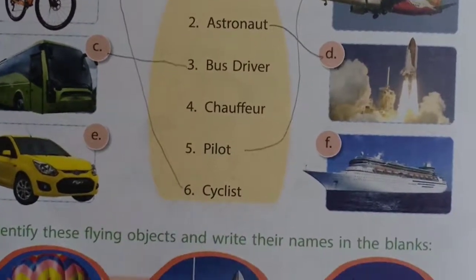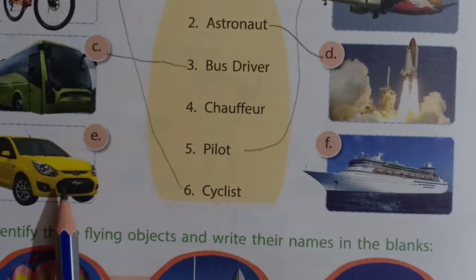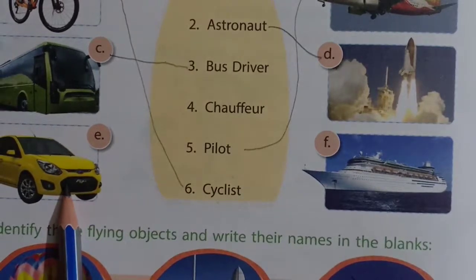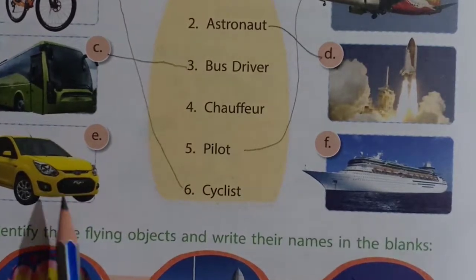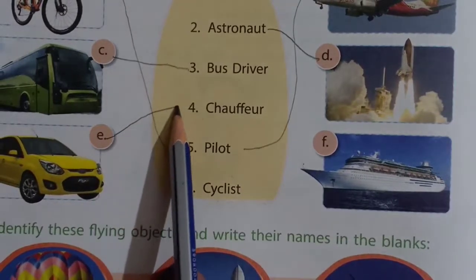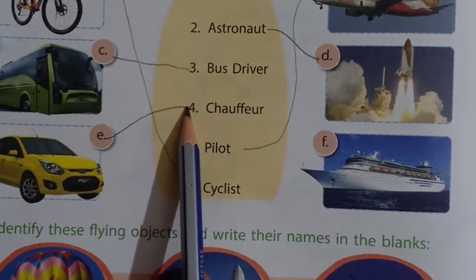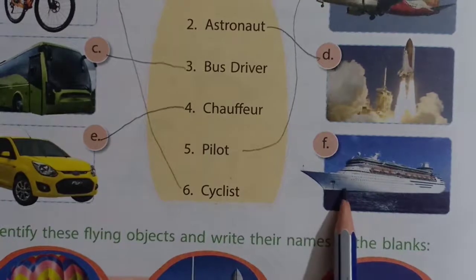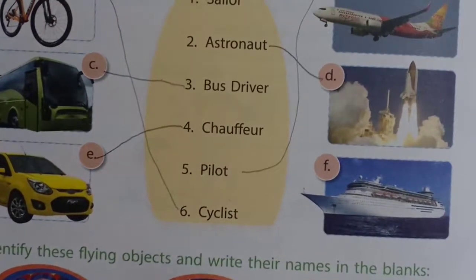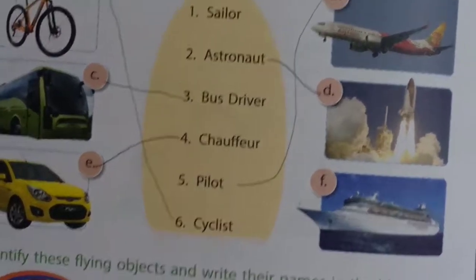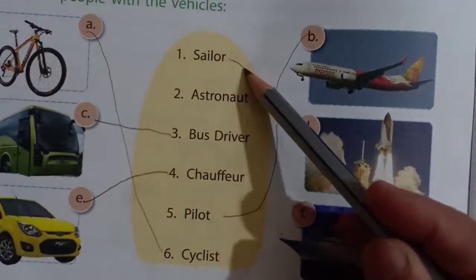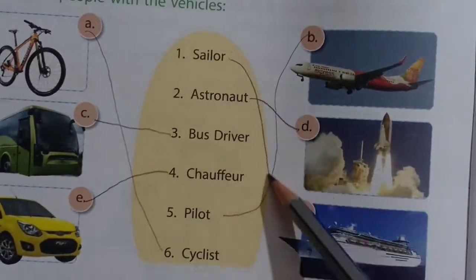Next is E. This is a car. Who drives the car? A chauffeur. So match E with 4. And this is a ship. Who sails a ship? Sailor. So match number 1 with F.